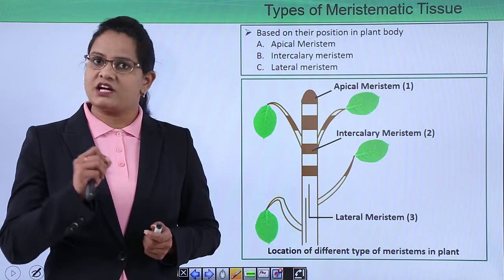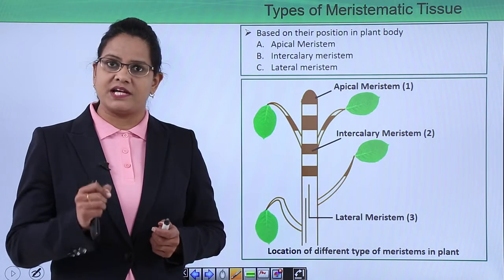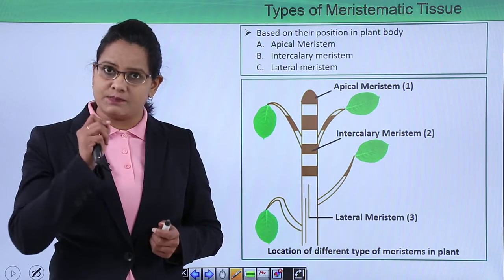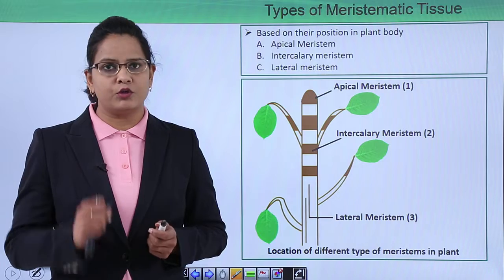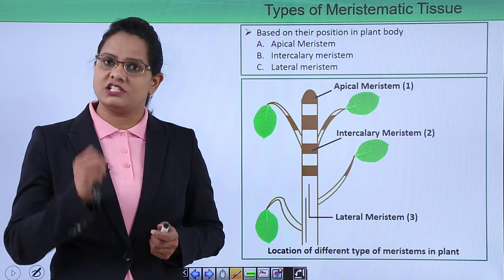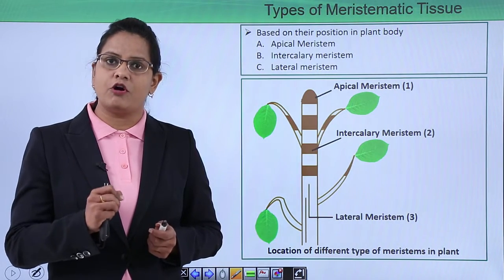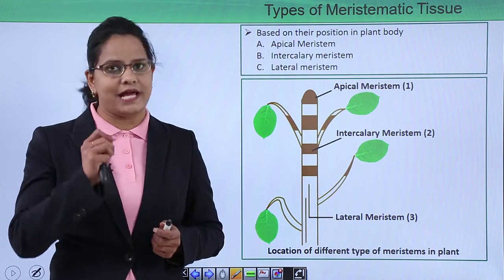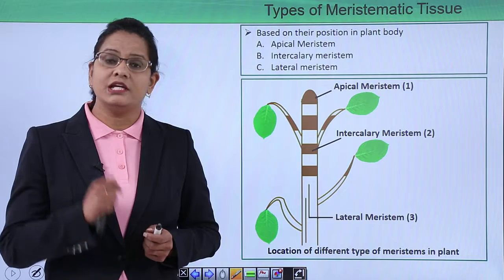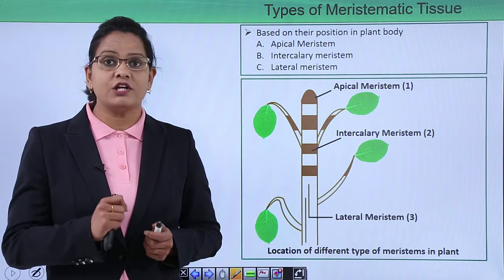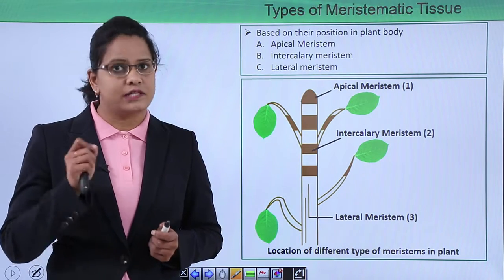The apical meristem is present at the tip of the stem and the tip of the root, and it is responsible for increase in length of the plant. Let us now see what is the function as well as the location of intercalary and the lateral meristem.